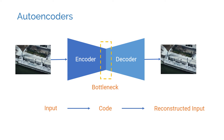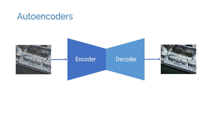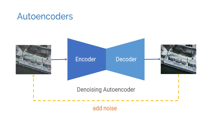The inputs and the outputs don't have to be identical. For example, the input can be a noisier version of the output. This noise can be introduced artificially. In this setting, the network tries to learn to denoise its inputs. Such a model is called a denoising autoencoder.